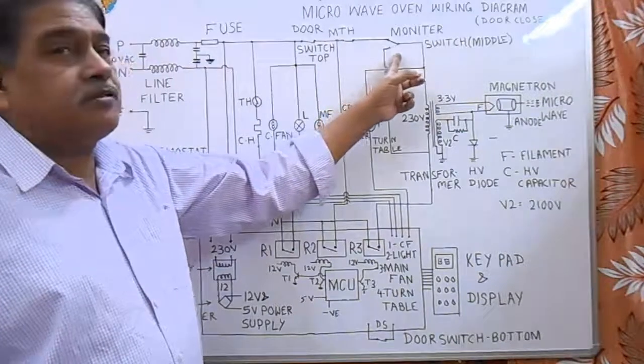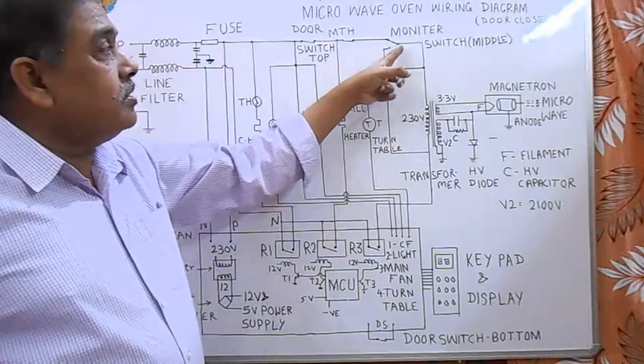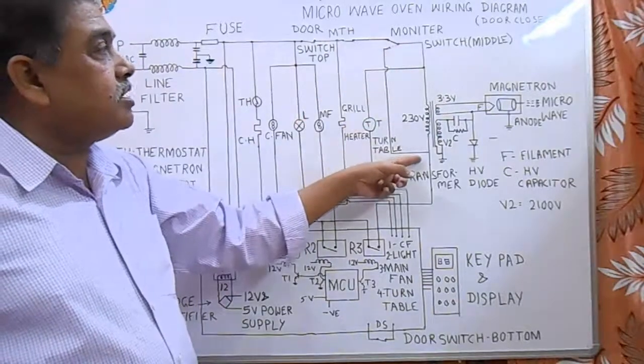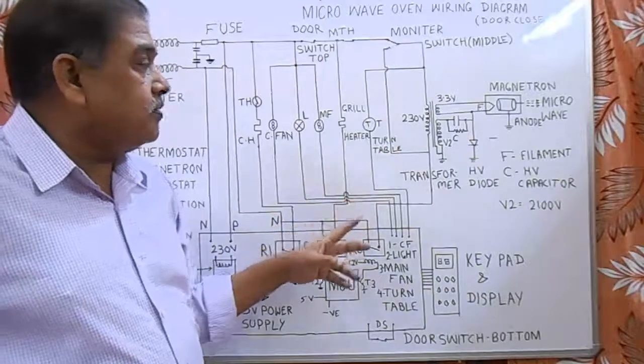this switch cuts the main supply to the grill and microwave transformer. The second monitor switch, whenever we open the door, changes over to the negative side of the transformer, so there is no chance of producing microwaves.